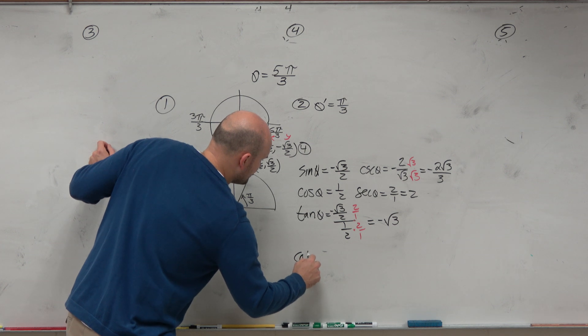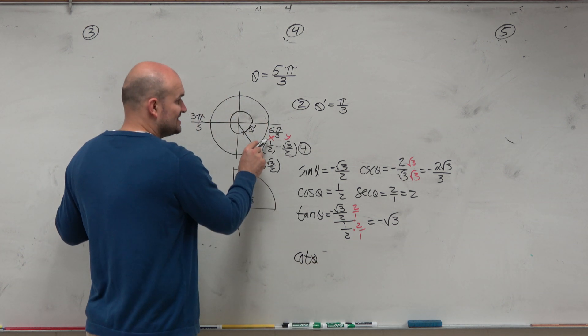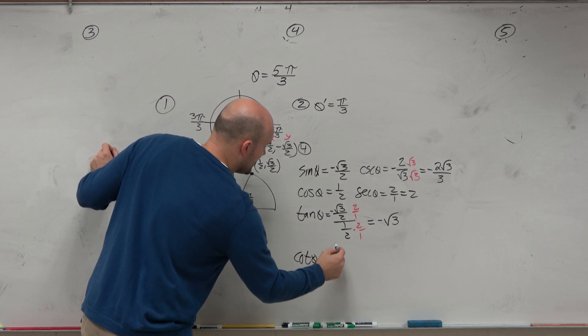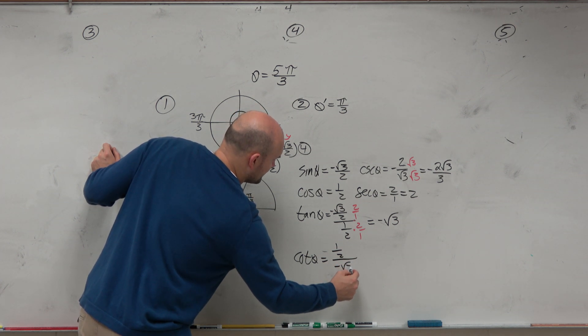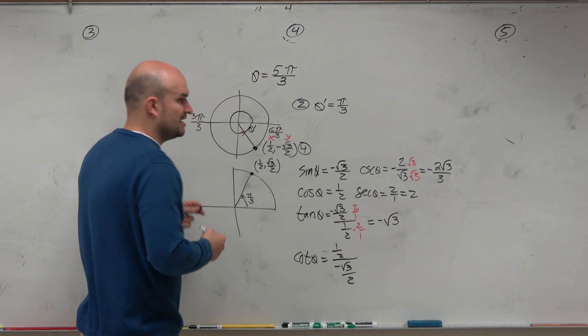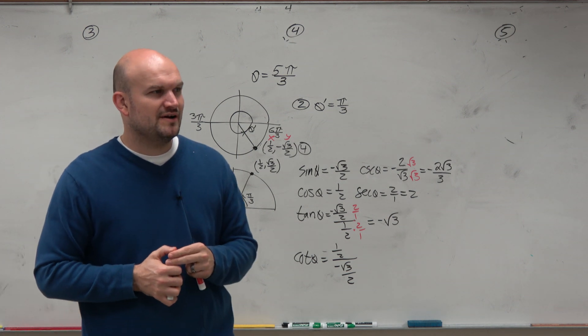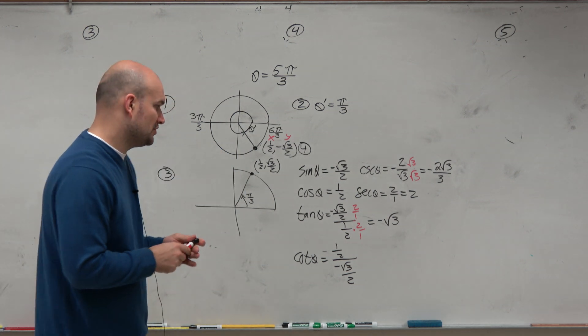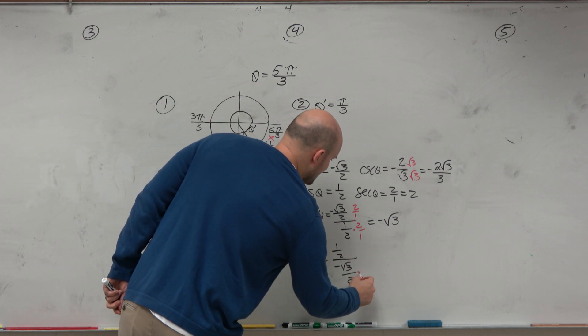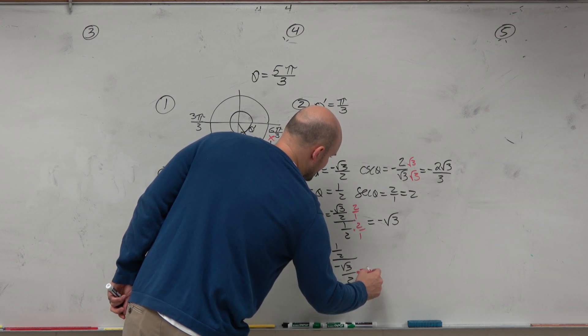When you guys do the cotangent of θ, that's x over y, so now we have 1/2 divided by negative square root of 3 over 2, and then you say, oh, what do we do when we divide a fraction by a fraction? The same thing. You can multiply by the reciprocal.